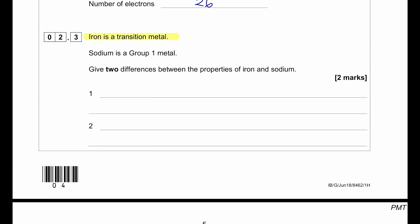Iron is a transition metal and sodium is a group 1 metal. Give two differences between the properties of iron and sodium.